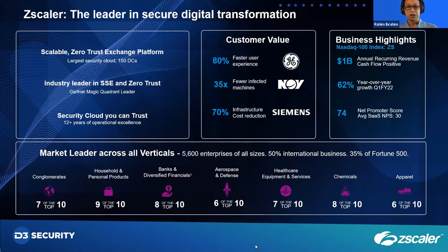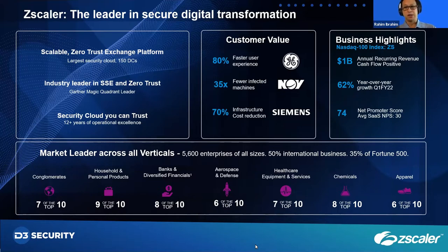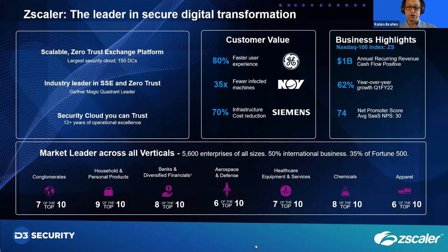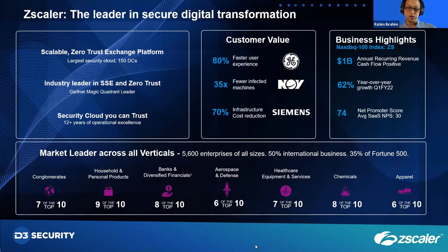Some proof points from our customers: GE said that once they moved to Zscaler, their employees accessing internet apps enjoy 80% faster speeds. A Fortune 500 company that was constantly re-imaging endpoint devices due to infections saw a 35x reduction in that activity after deploying Zscaler. Siemens saw huge savings on infrastructure — no more virtual machines, no more expensive links. By adopting a zero trust architecture, we've helped customers accelerate digital transformation, deliver better user experience, reduce risk, and reduce cost.